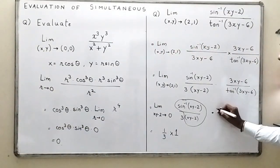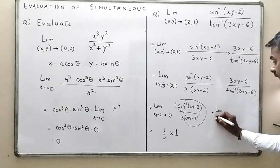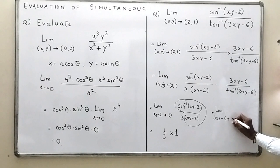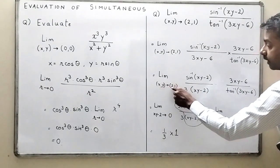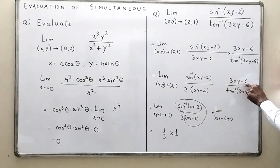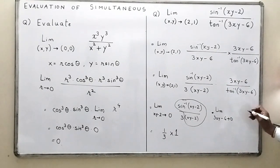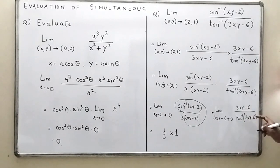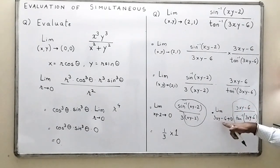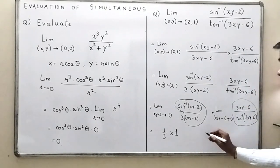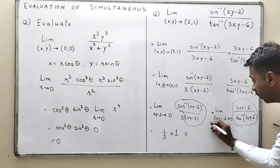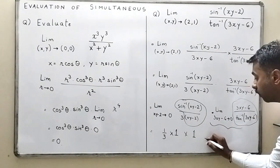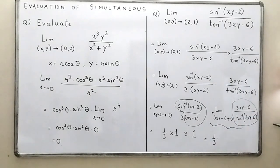So the complete limit is (1/3) · 1 · 1 = 1/3. The final answer of this limit is 1/3.